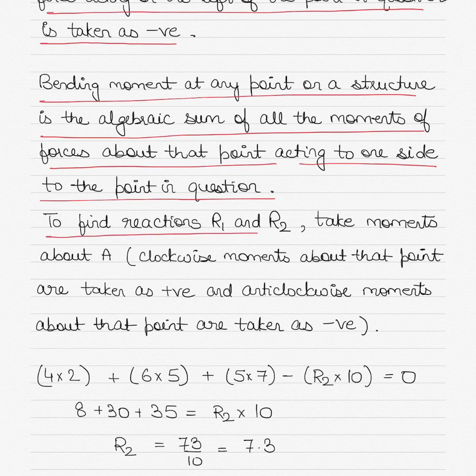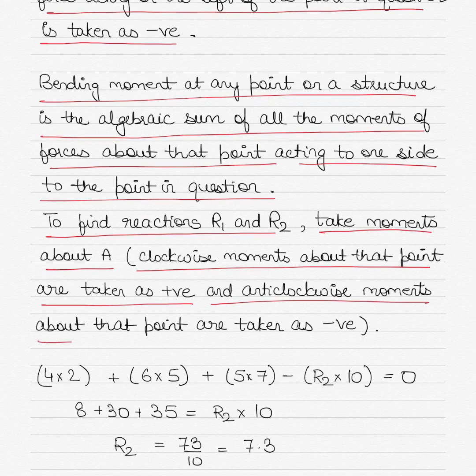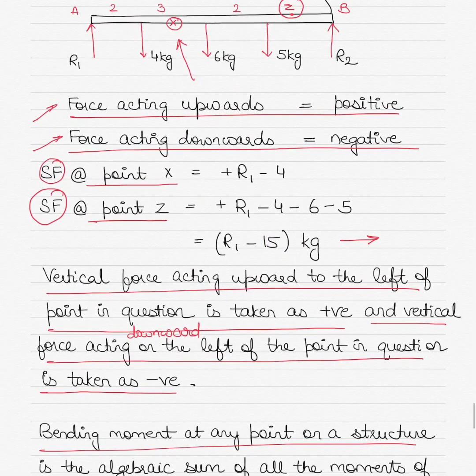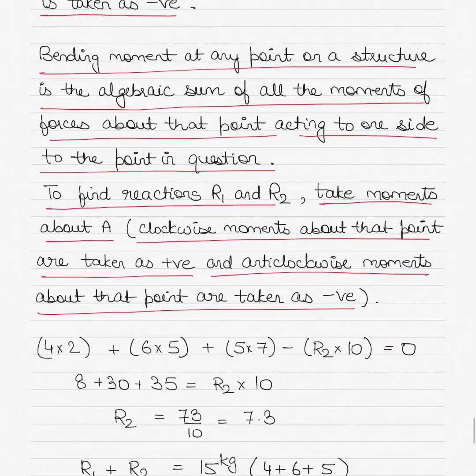To find reactions R1 and R2, take moments about point A. Clockwise moments about that point are taken as positive and anti-clockwise moments are taken as negative. In this case it will be 4×2 + 6×5 + 5×7. You can see 4 kilograms is acting downwards but the distance is 2 meters. Similarly, 6 kilograms is acting downwards but the total distance is 2+3 = 5. Similarly, 5 kilograms acts at a total distance of 2+3+2 = 7.